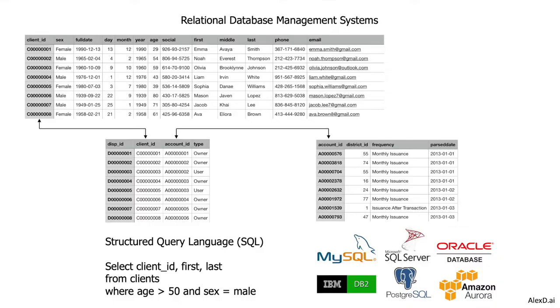Here are some of the most important examples of RDBMS: MySQL, Microsoft SQL Server, Oracle Database, IBM DB2, PostgreSQL, and AWS Aurora, among others. However, relational database management systems are very good for structured data, but they are not so good for unstructured data.